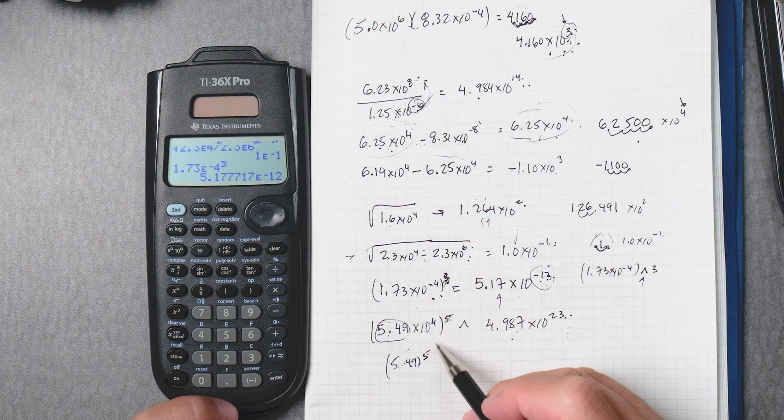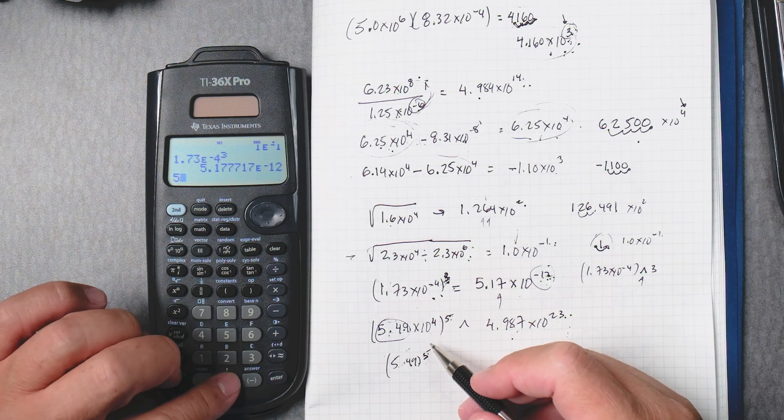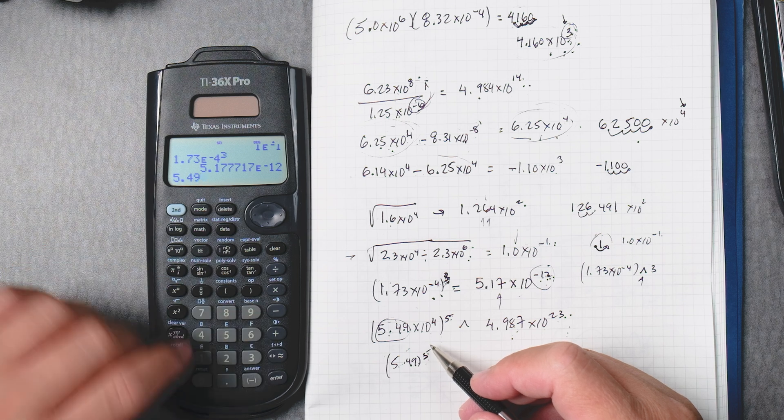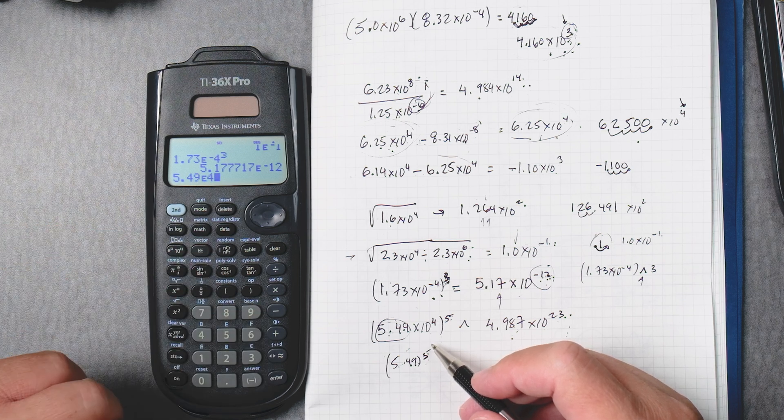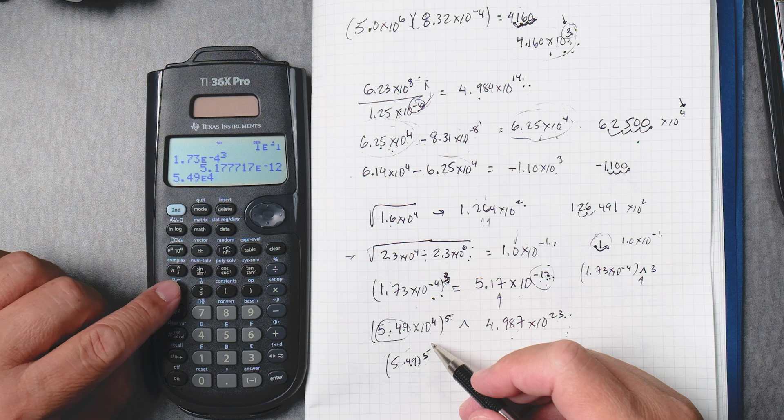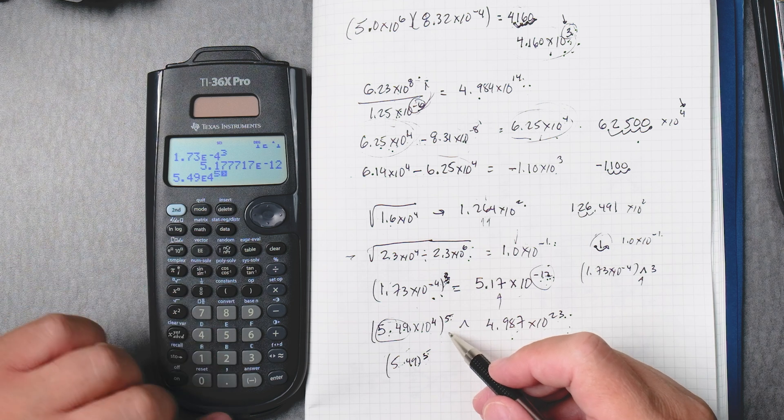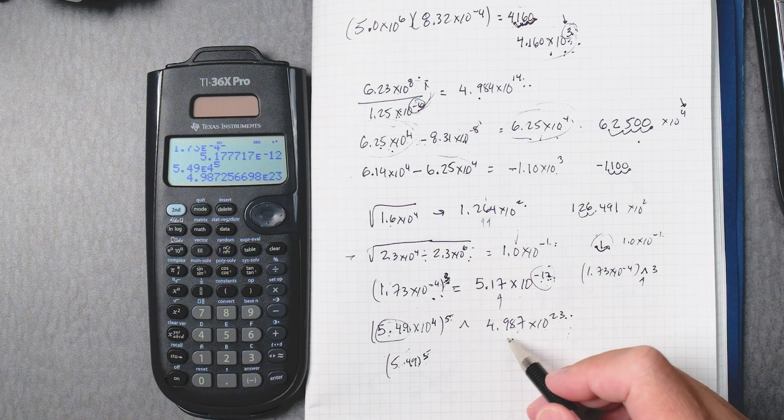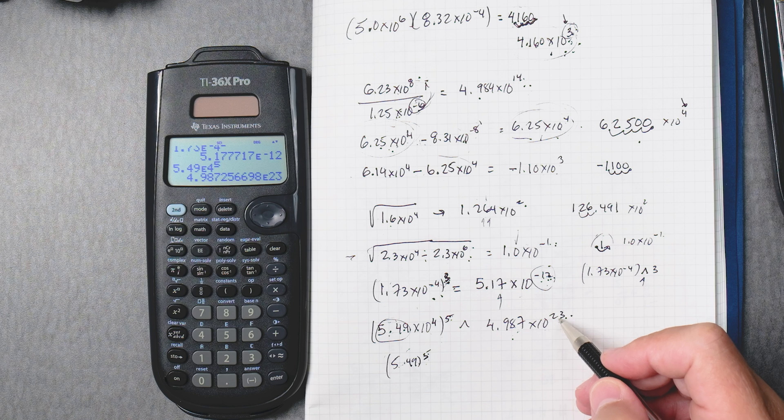And then here, this one, we'll do one more, 5.49 to the power of 4. And then x to the box to the fifth power, enter. 4.987 times 10 to the 23rd.